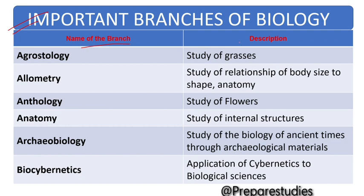Name of the branch and description. Agrostology: study of grasses. Allometry: study of relationship of body size to shape. Anthology: study of flowers.